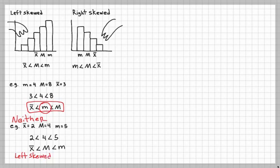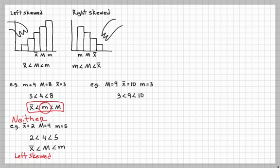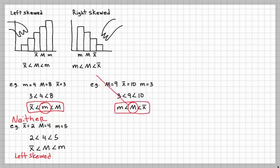Next example: the median is 9, the mean is 10, and the mode is 3. Put them in order: 3 < 9 < 10. The 3 is the mode, 9 is the median, and 10 is the mean. The median is in the middle, and this matches mode < median < mean, so this is right skewed.